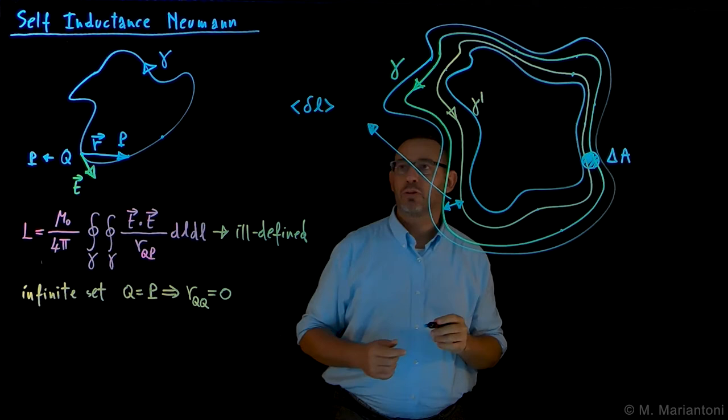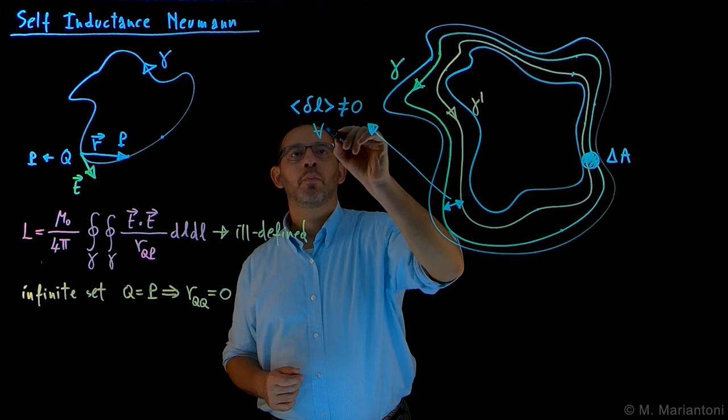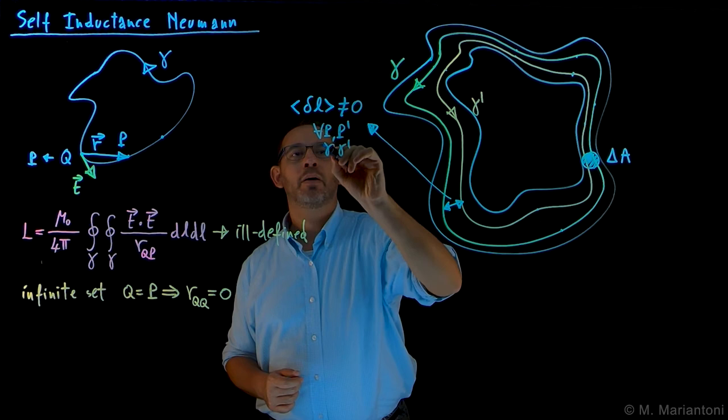This mean of delta L is always different than zero. For each point, P or P prime on gamma and gamma prime, respectively. This is the essence of this whole problem.